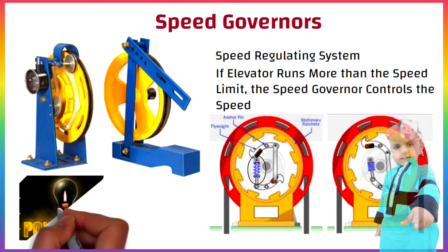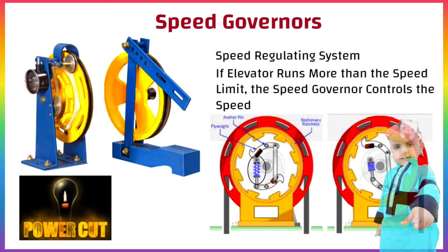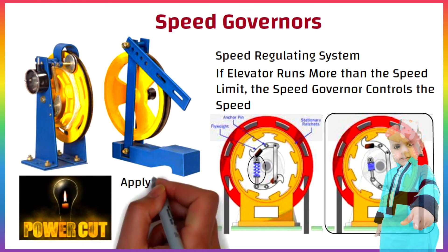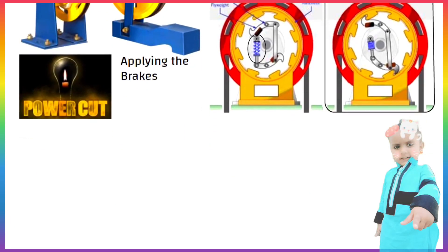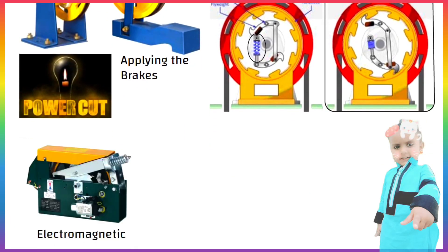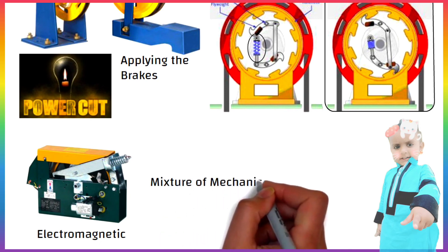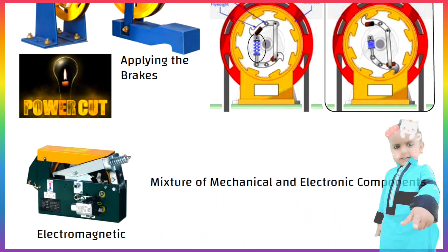First, the governor arms might cut power to the lift motor. If that fails and the lift continues to accelerate, the arms will fly out even further and trip a second mechanism applying the brakes. Some governors are entirely mechanical, others are electromagnetic, and still others use a mixture of mechanical and electronic components. It is usually attached to the bottom of the car and is also known as the governor rope.